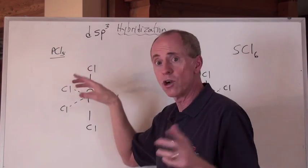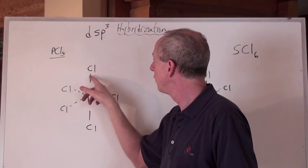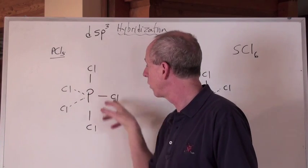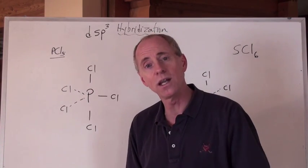And by the way, since this chlorine, when I draw the Lewis diagram, would have 1, 2, 3, 4 effective pairs around it, all the chlorines have sp3 hybridization.